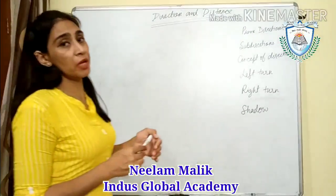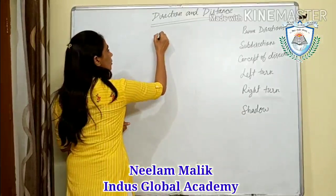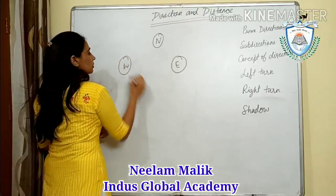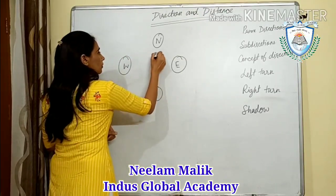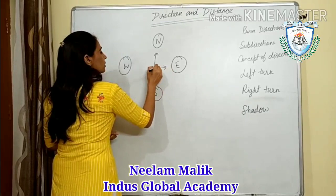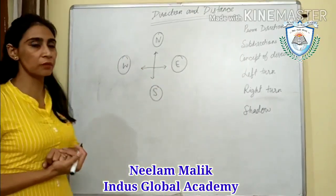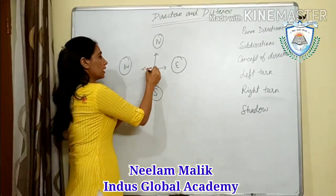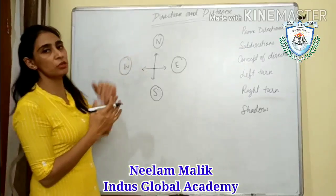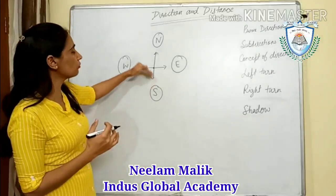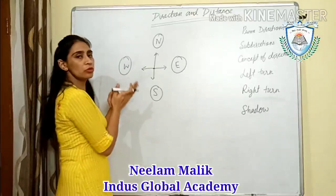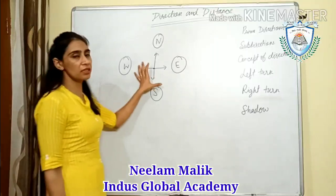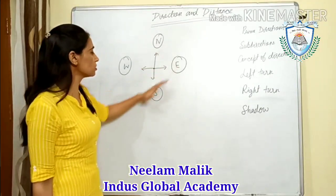There are four prime directions: north, east, west, and south. We always represent the directions like this. If we are here and we have to go in the north direction, we will go upward. If we have to go east, we will go to the right-hand side. These are the standard directions: north, east, south, and west.